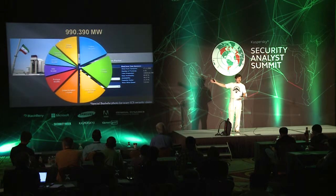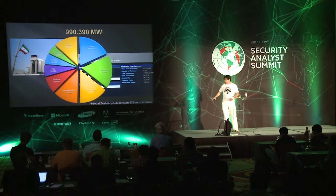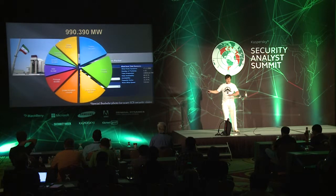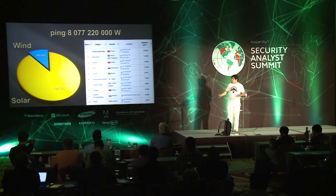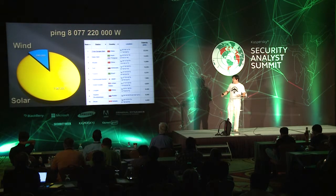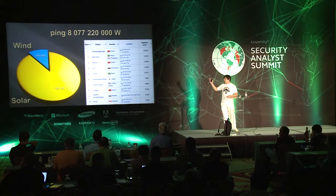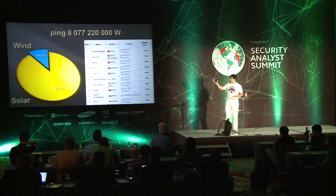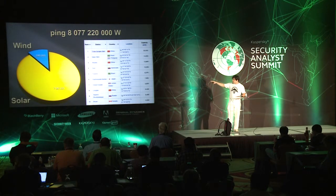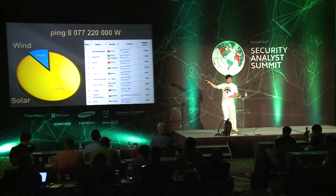How much power are we talking about? About one gigawatt — that's a special picture of the Boucher nuclear plant, because it has the same power, and without Stuxnet at all. If you combine it all together, we calculate that through free Shodan searches you can get access to eight gigawatts of instant power — that's about the fifth largest hydroelectric station in Brazil. It's a lot of energy.